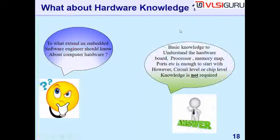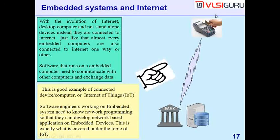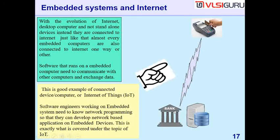A credit card machine is a good example — it is an embedded computer with a display, keyboard, and a sensor to read your credit card. You swipe your card, enter details, the computer automatically communicates to the bank, completes the transaction, and prints the receipt. This is a good example of a banking IoT use case.